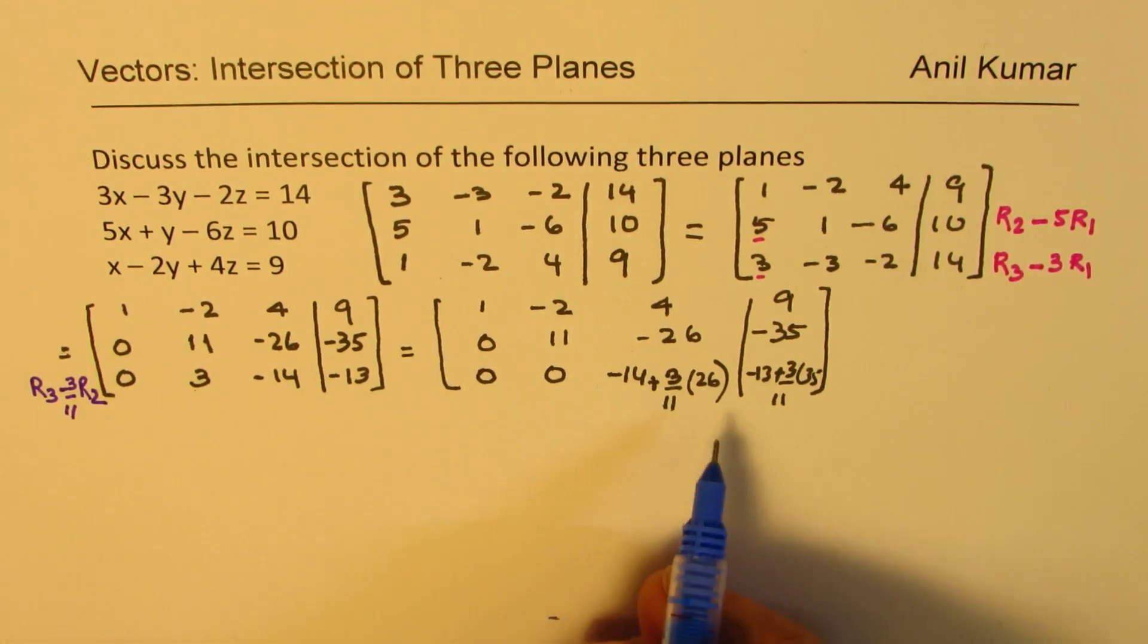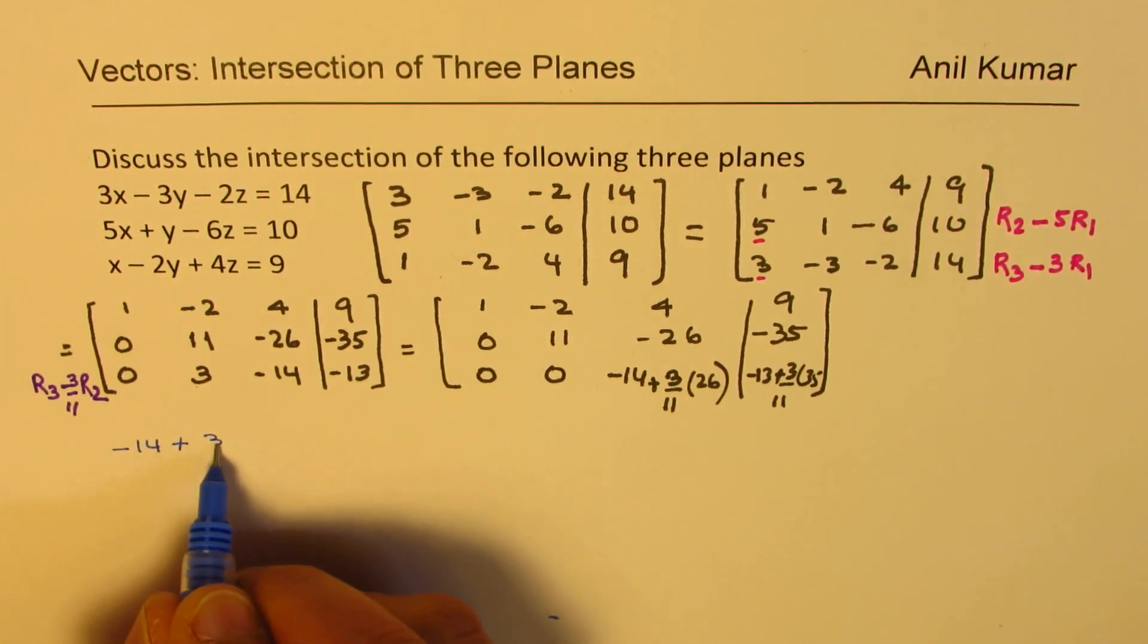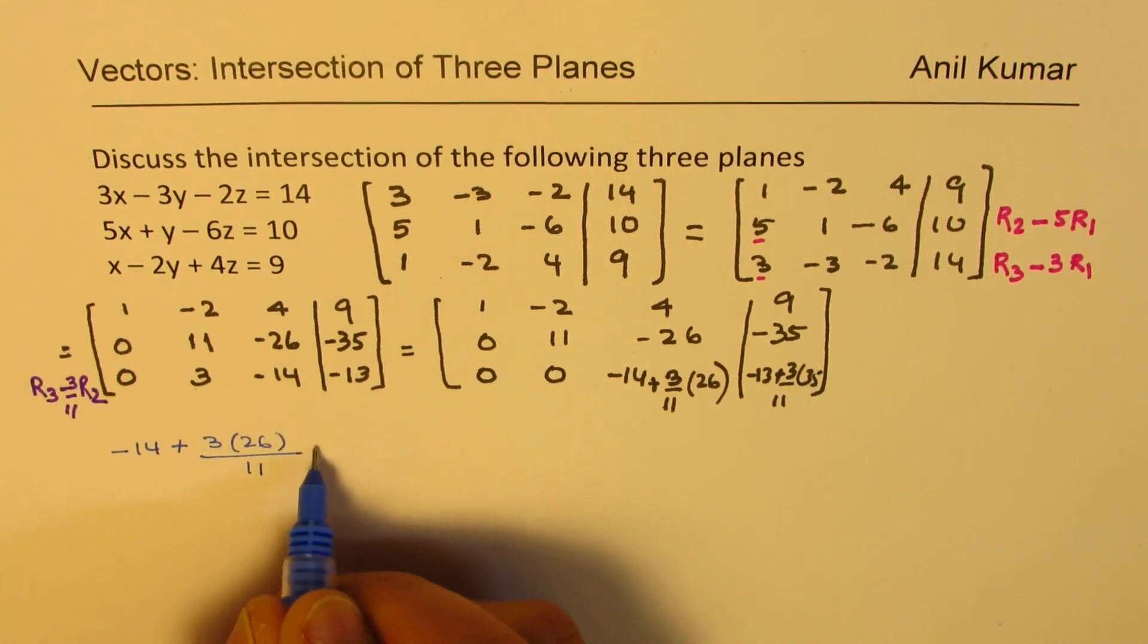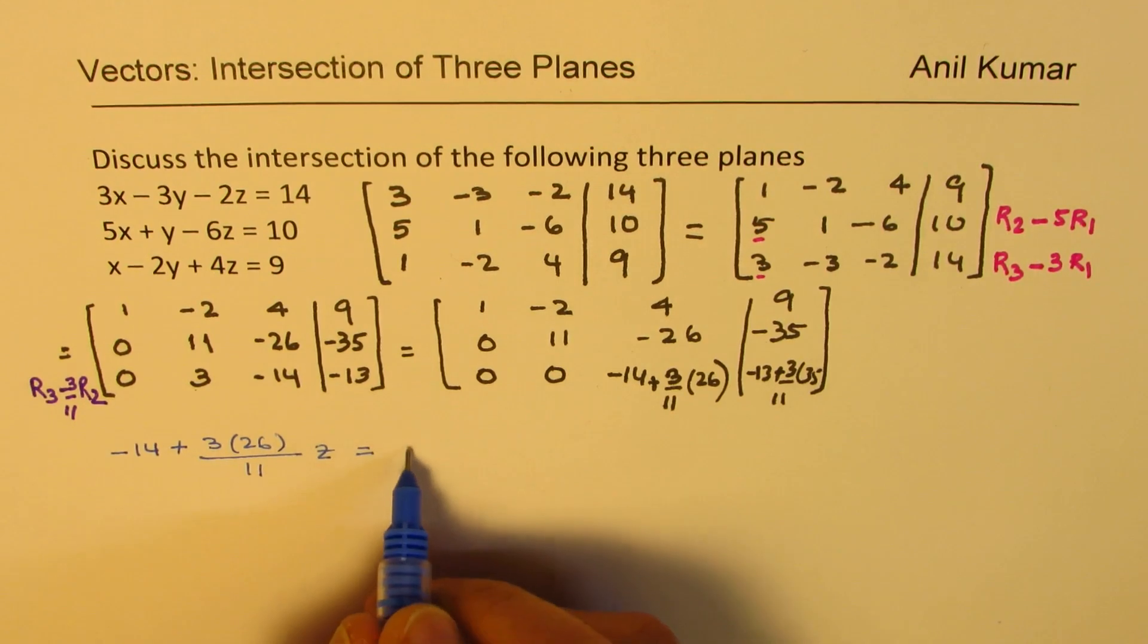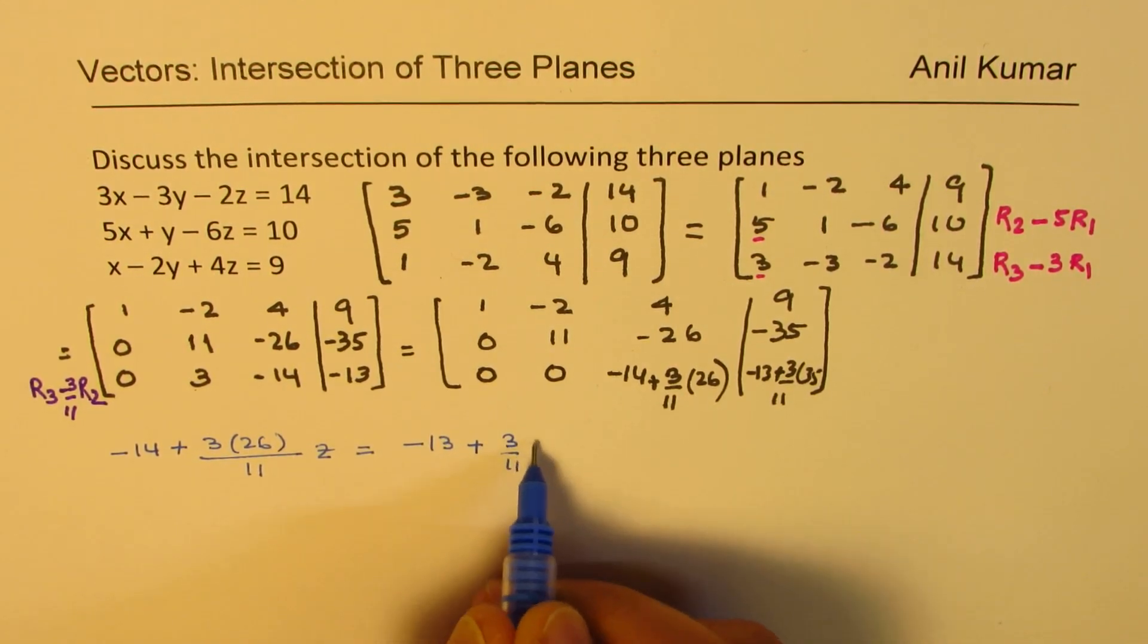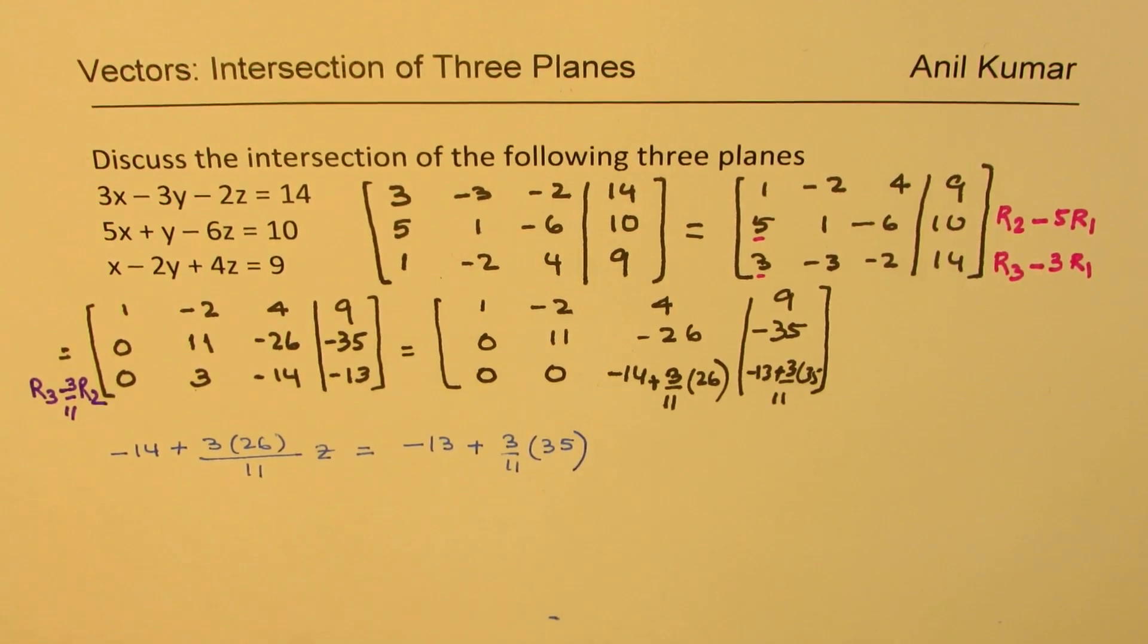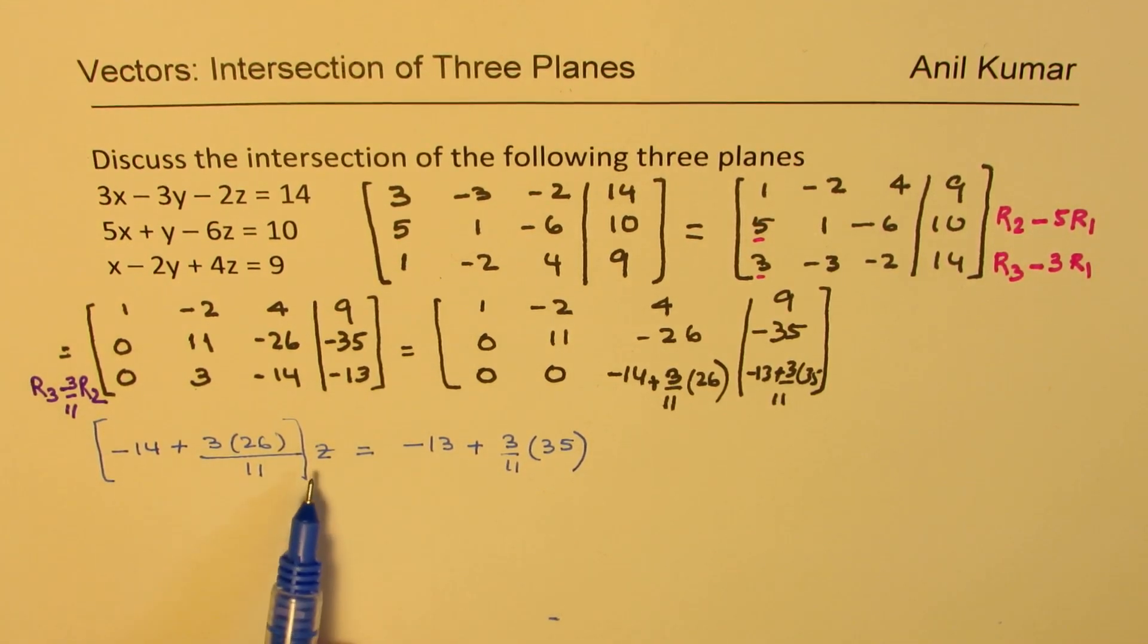Let's simplify these numbers and get our answers. So that basically means that the z value, this is like minus 14 plus 3 times 26 over 11 times z equals to minus 13 plus 3 over 11 times 35. So the value of z is the ratio of these two.